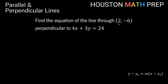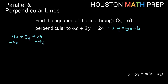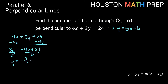Let's look at another one. We want to find the equation of the line through (2, -6), perpendicular to 4x plus 3y equals 24. We need to find the slope of this line and then use the perpendicular slope. It's not in slope-intercept form, so let's solve for y. Subtracting 4x from both sides: 3y equals negative 4x plus 24. Dividing by 3: y equals negative four thirds x plus 8. So the slope of this line is negative four thirds.